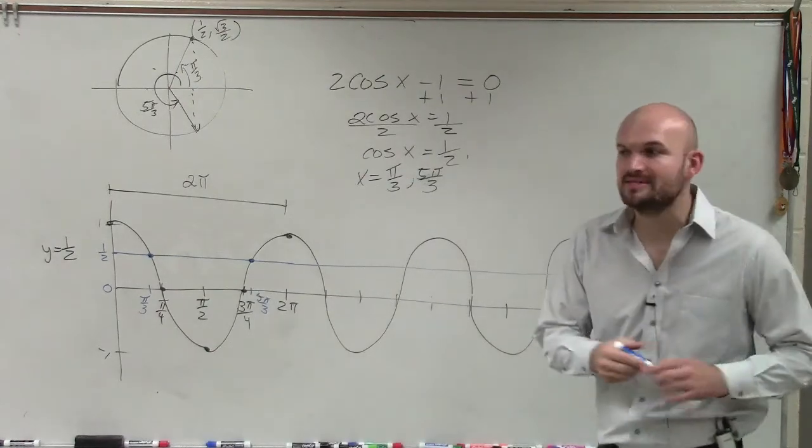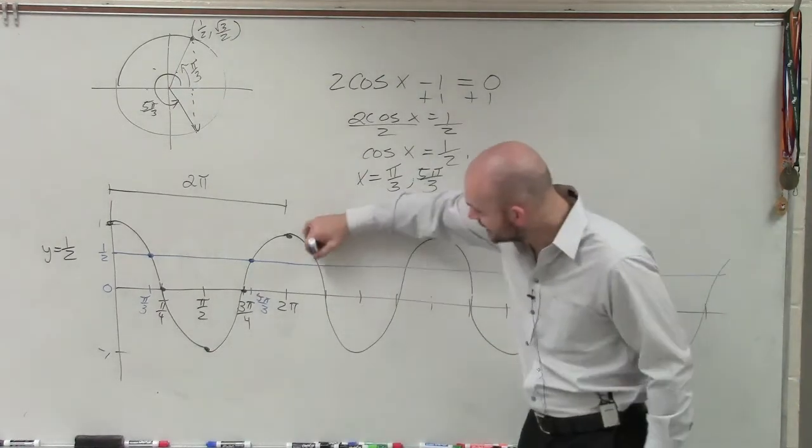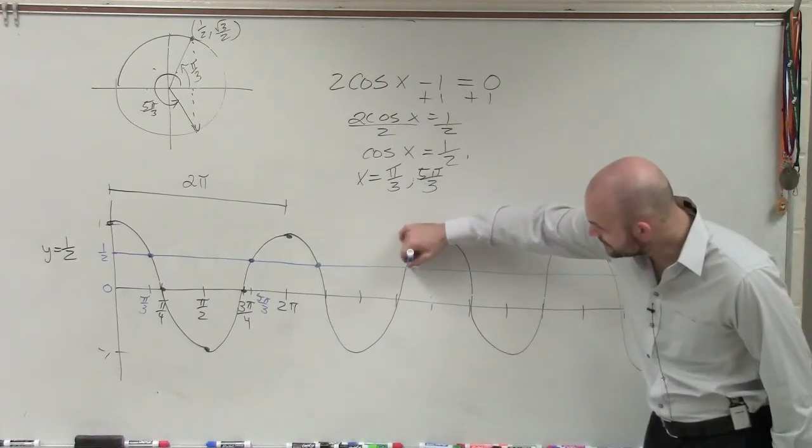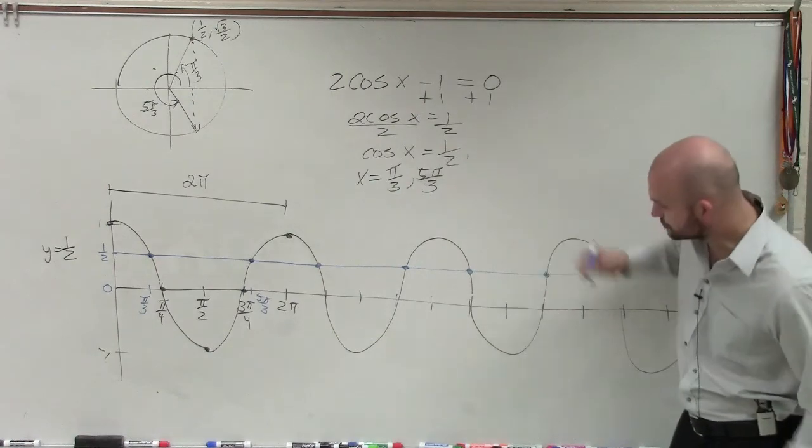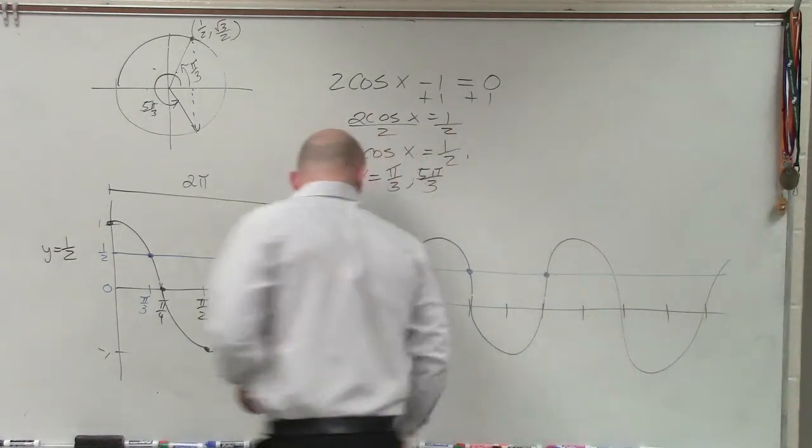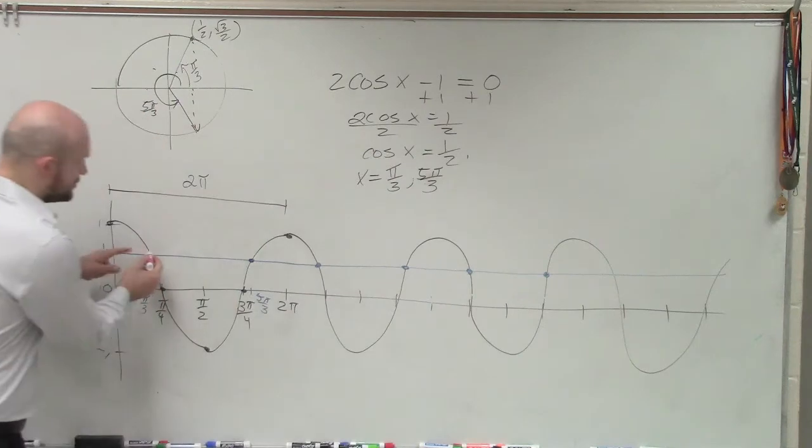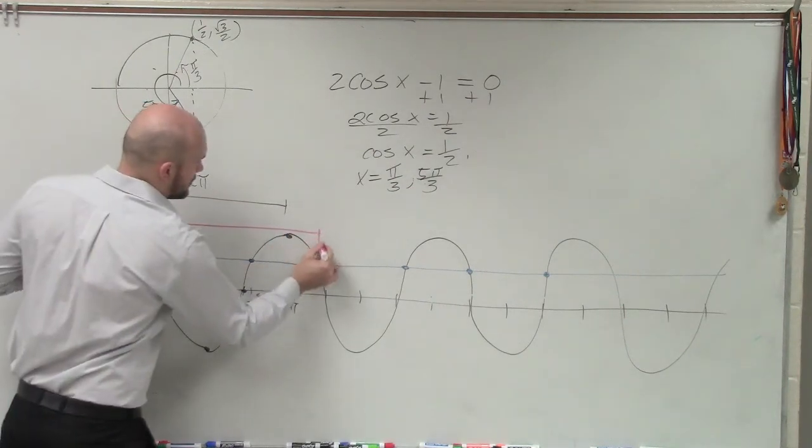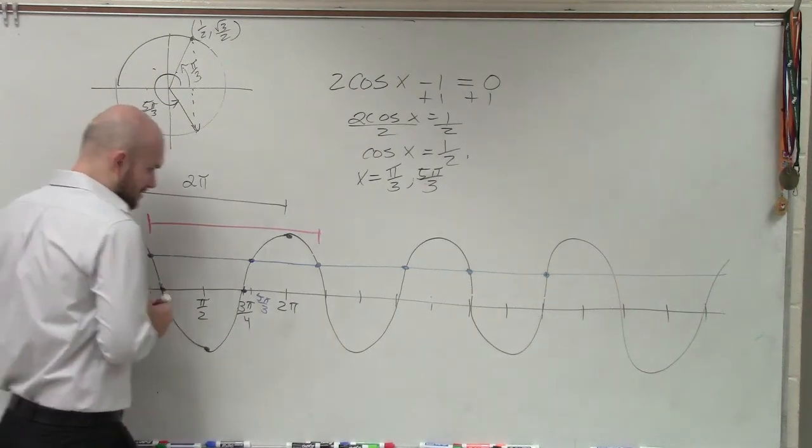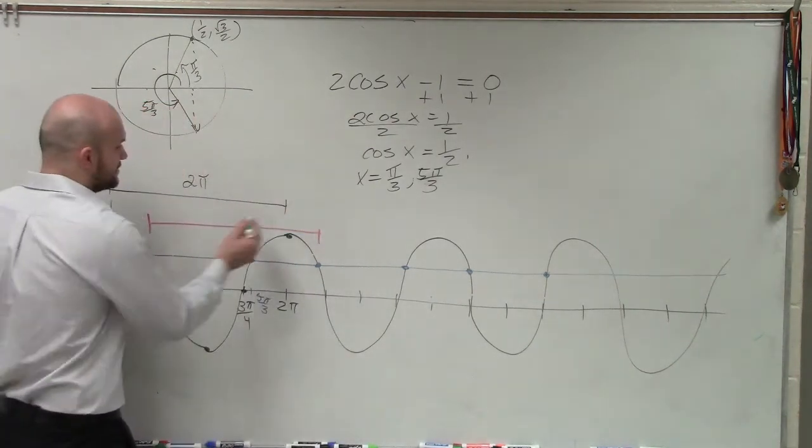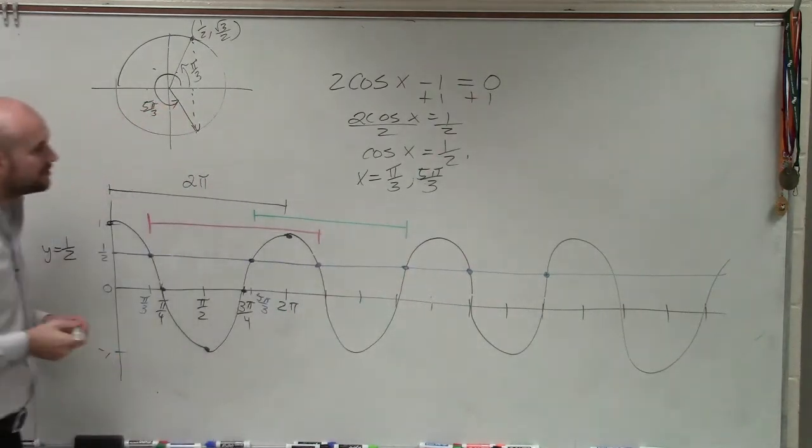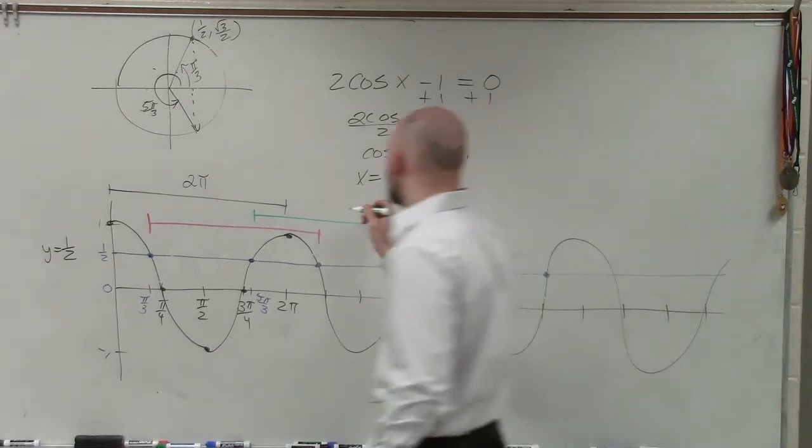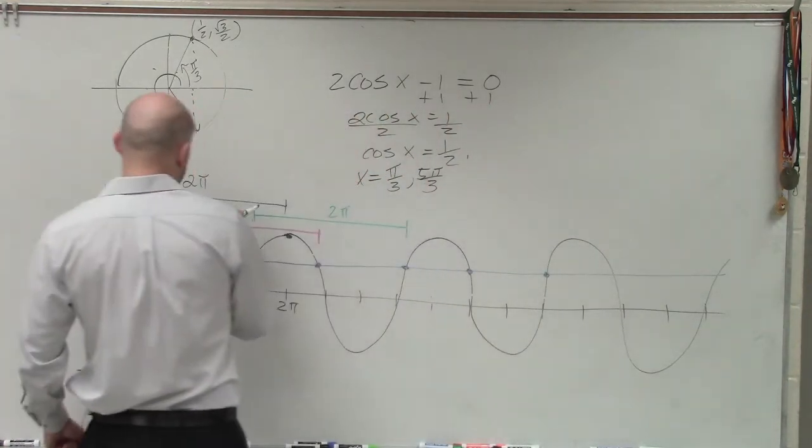So the reason why we say plus 2 pi is because you guys can see, obviously, that's my next solution. You can see, obviously, that's the next solution. There's a solution, there's a solution. So if I'm at this solution and I want to be able to determine what the next one is, look at what do you think the distance is? 2 pi. And they go from this solution to that solution. Look at what the distance, what does that distance look like? 2 pi. So that's why we add 2 pi to each one of these.